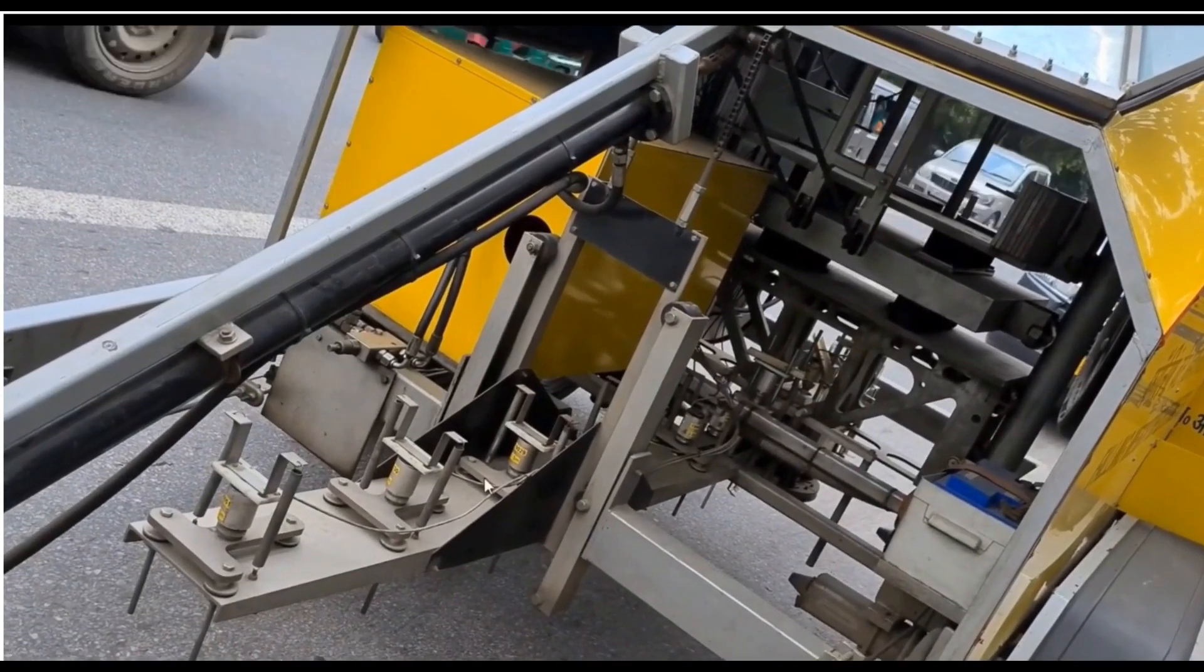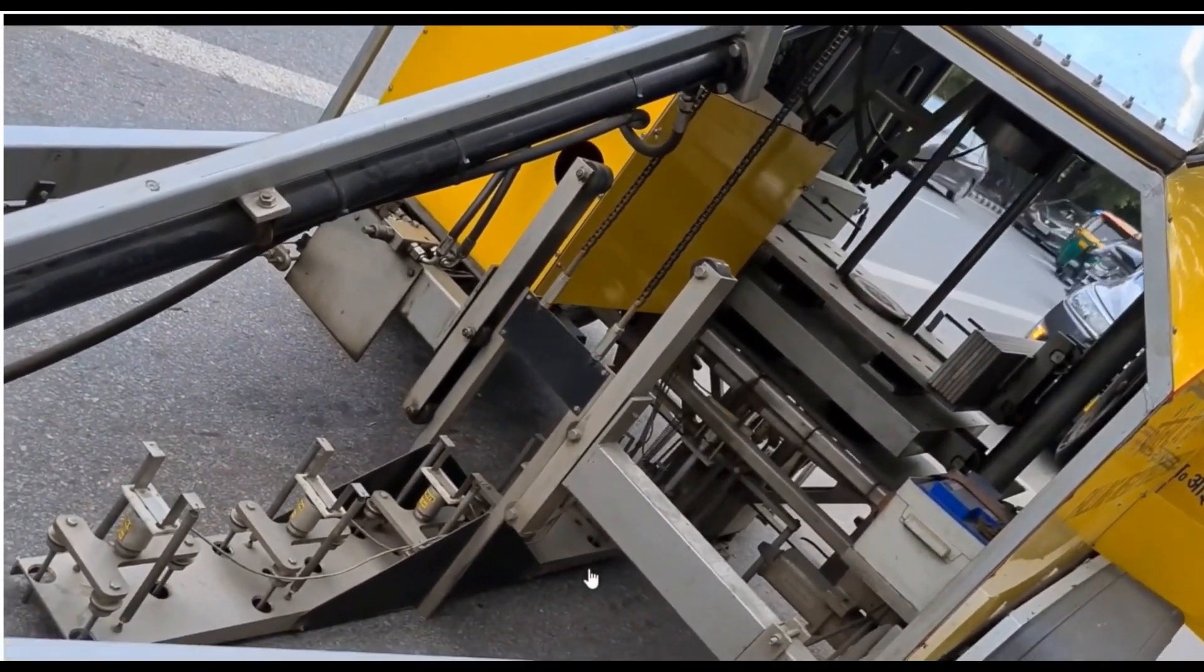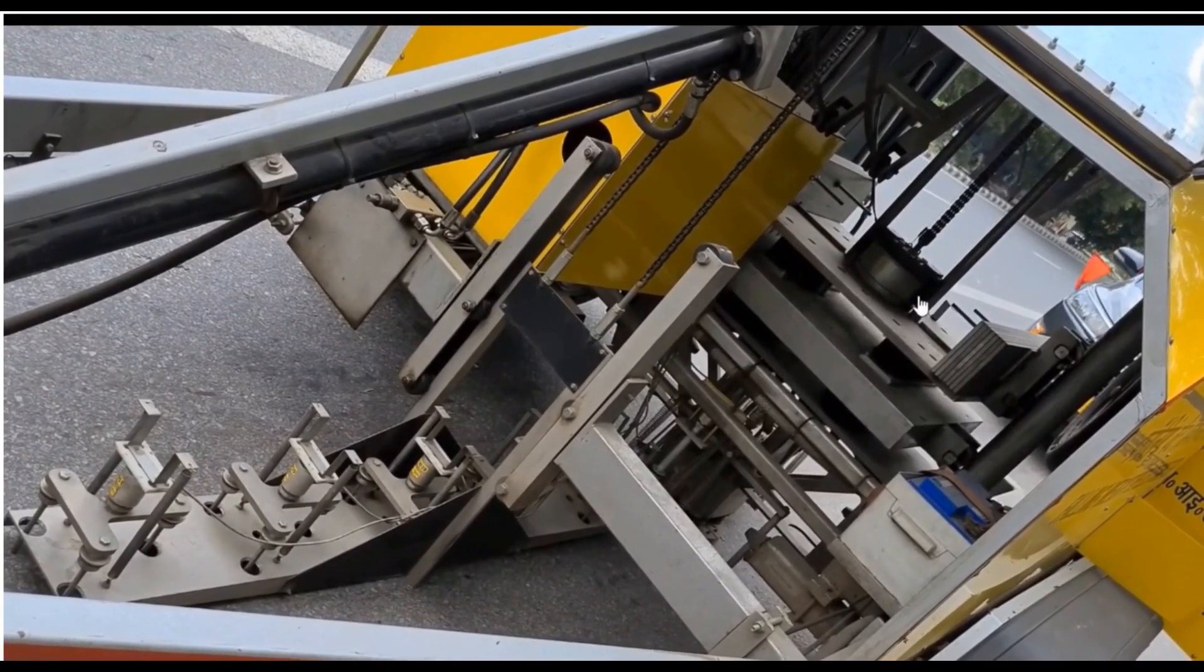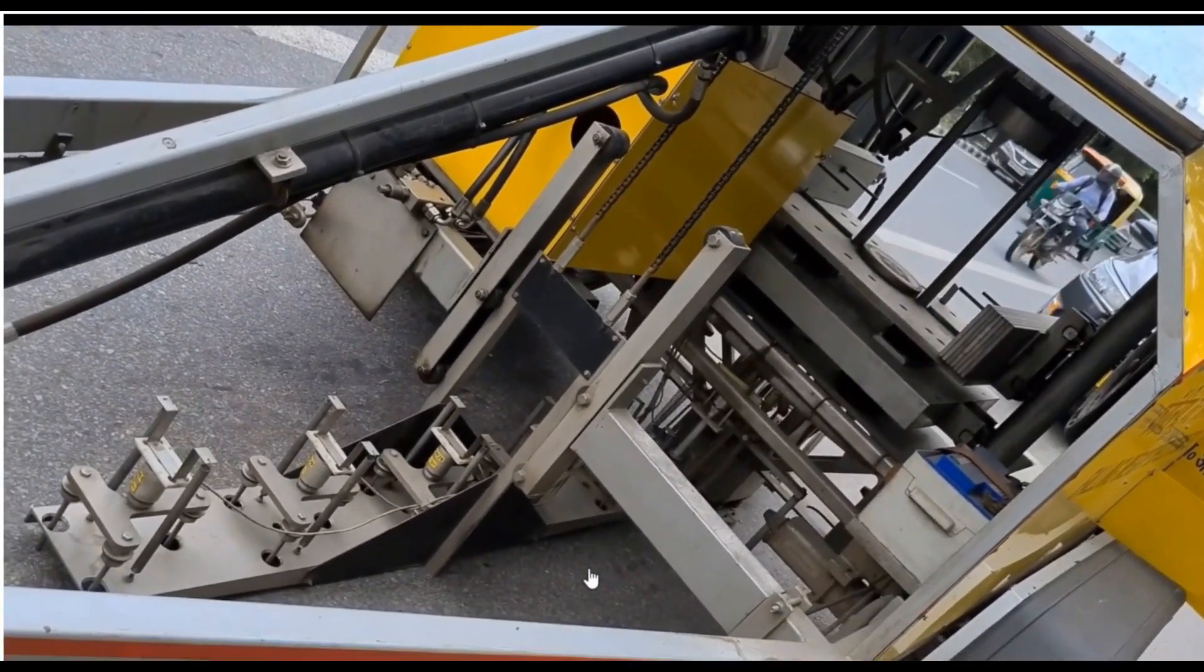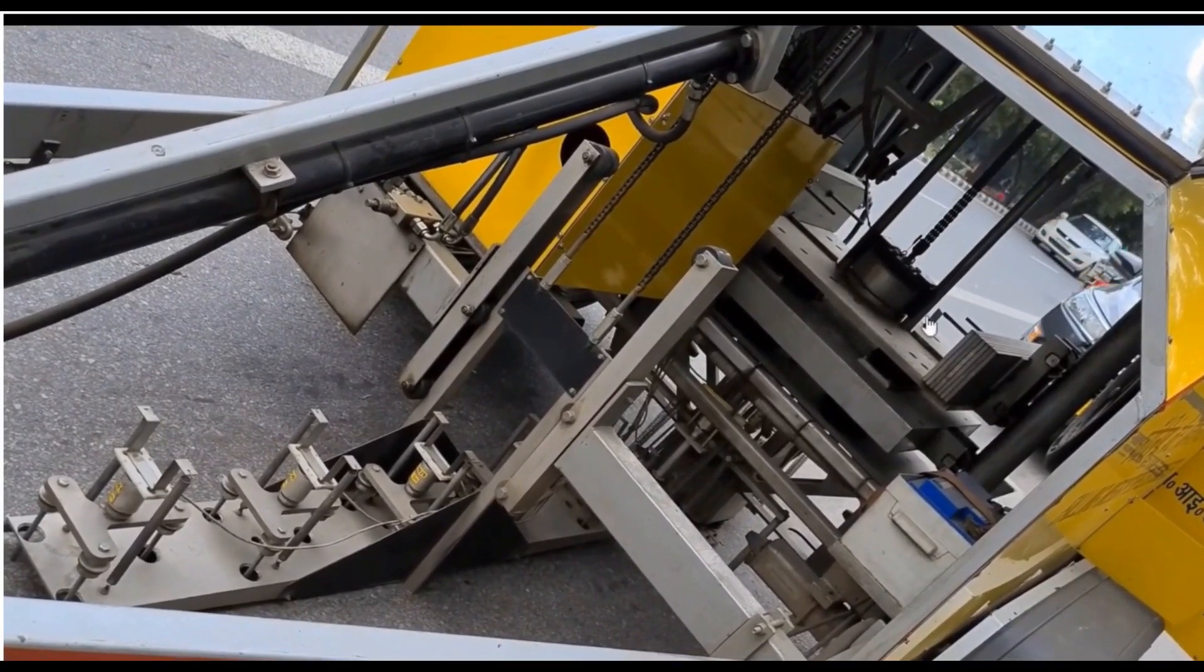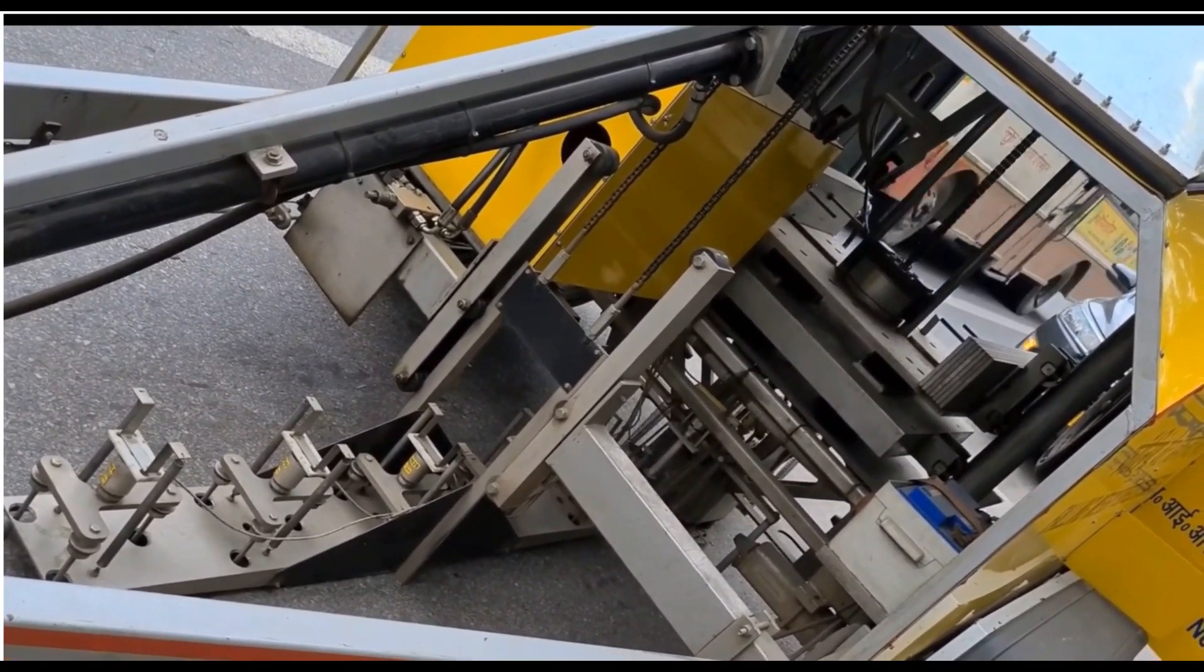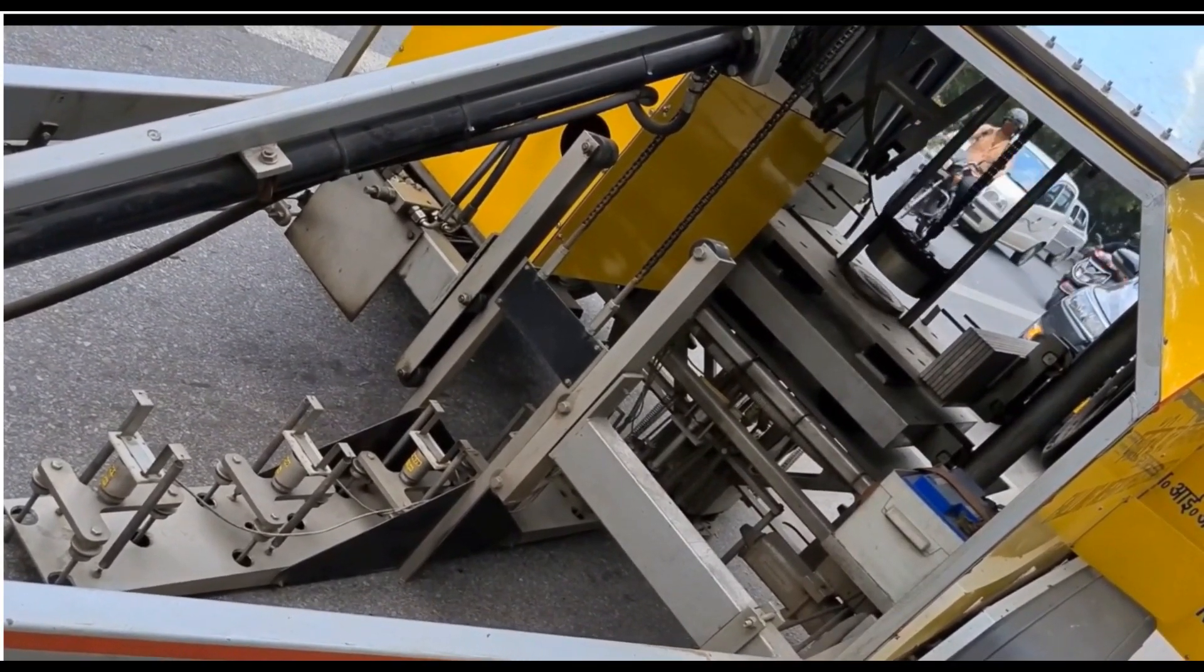From this side, these are the geophones and here is the loading plate. This is the load which is now raised through this magnet and then it is released from a height. And if you are testing a transverse joint, keep the plate at the edge of the slab. And if you are testing load transfer efficiency of tie bars, then keep it along the longitudinal joint on the shoulder lane.